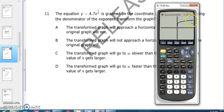It looks like we're approaching a horizontal asymptote. Now, if we go back to the equation screen,